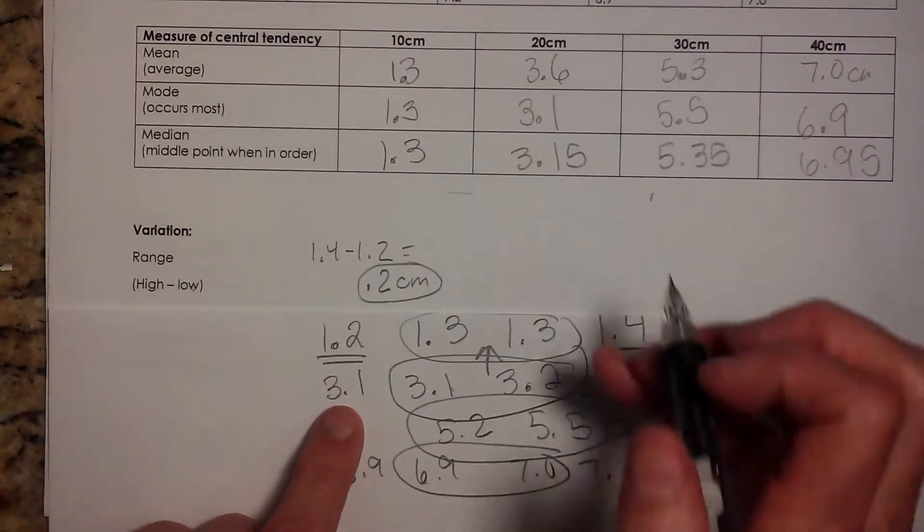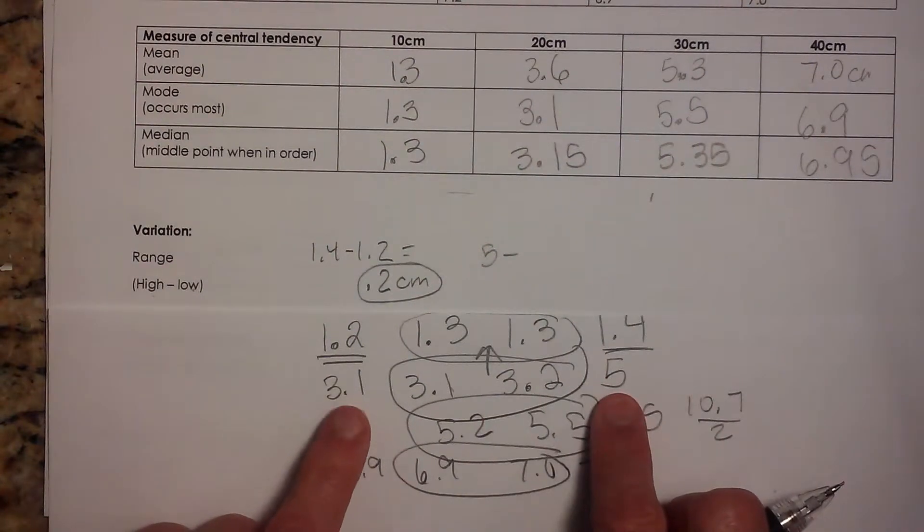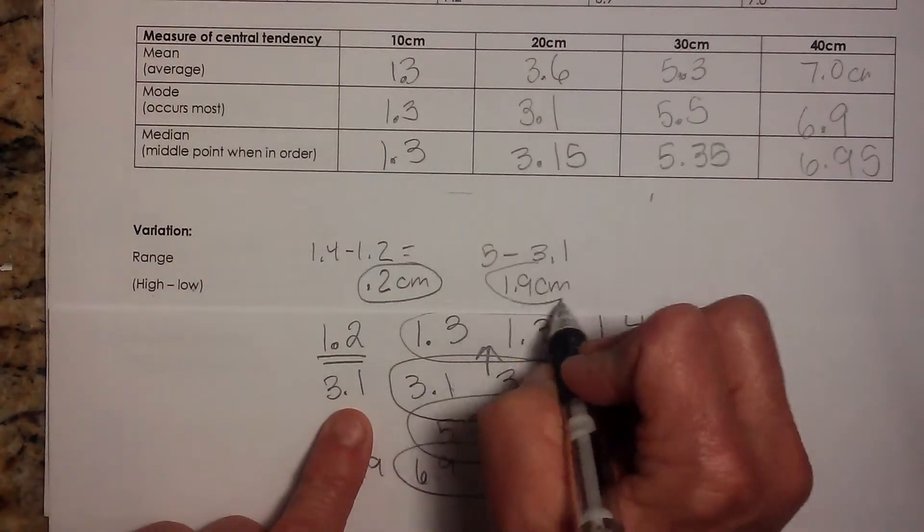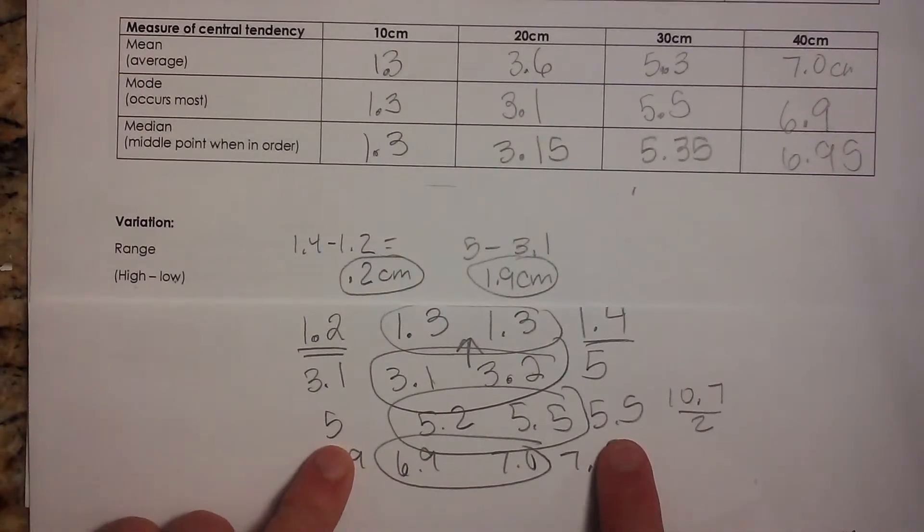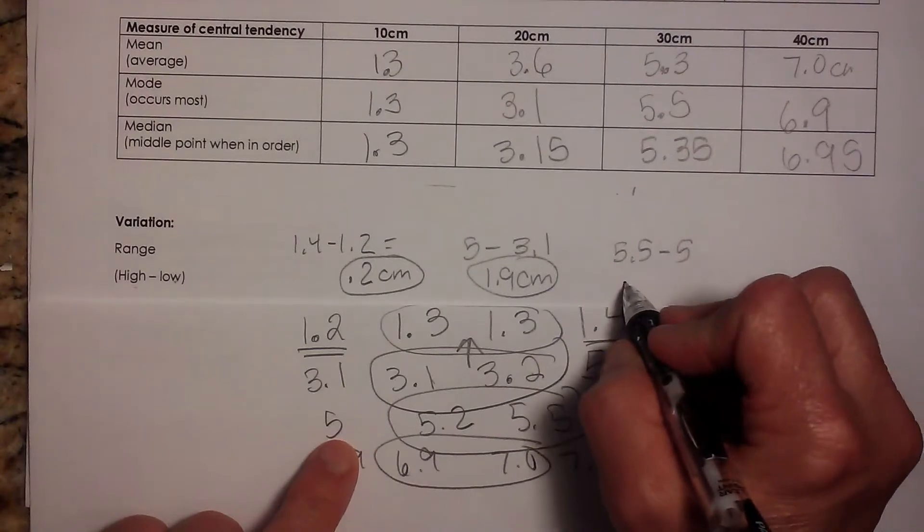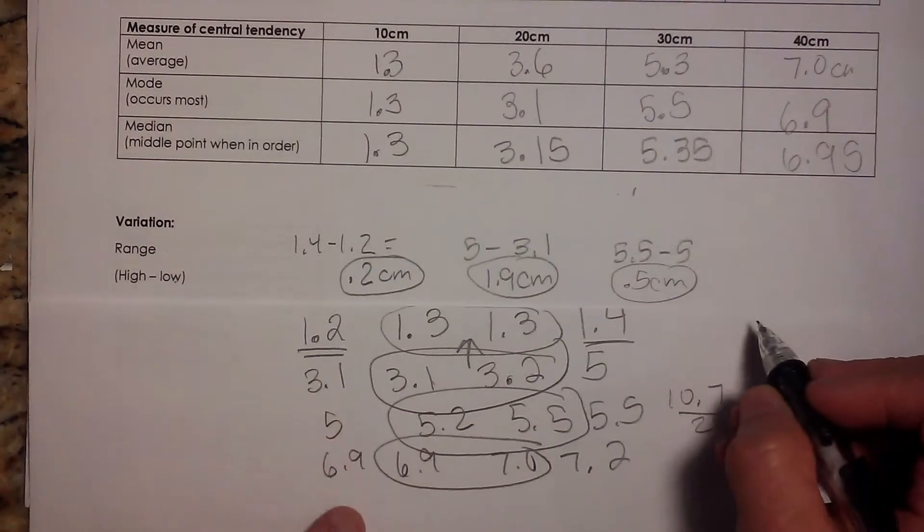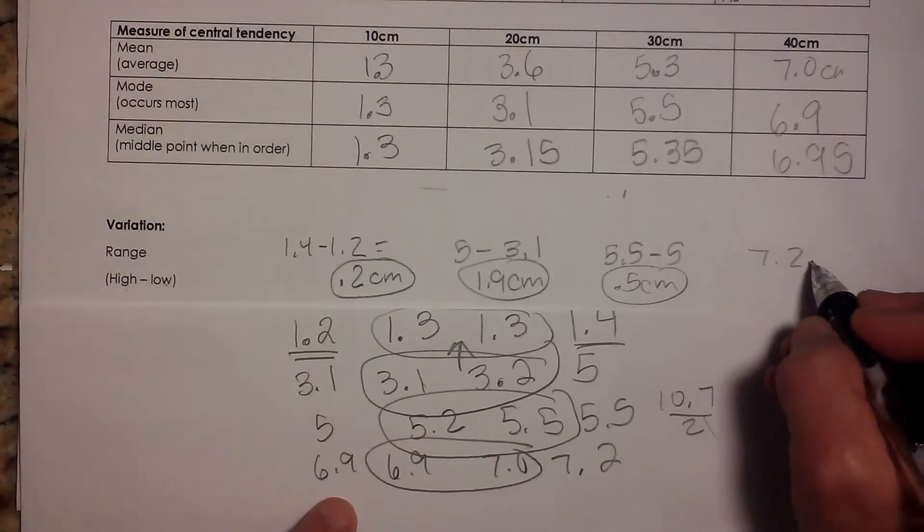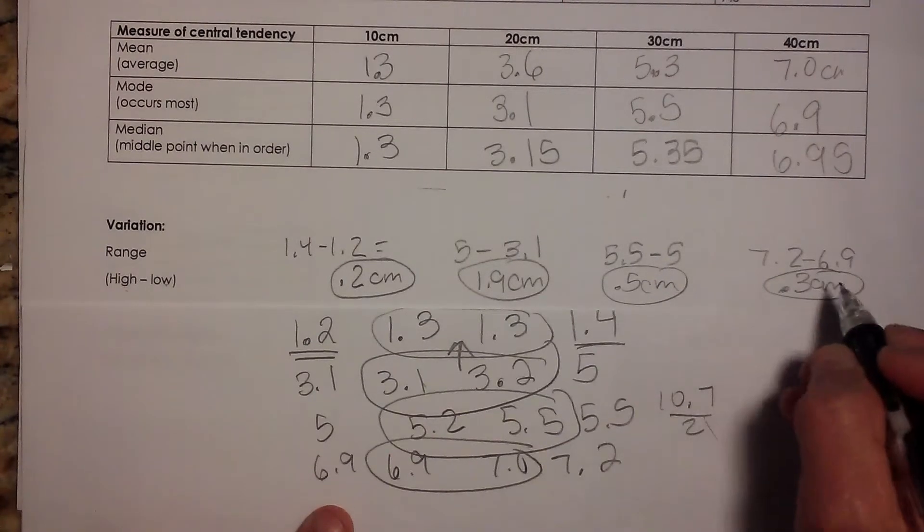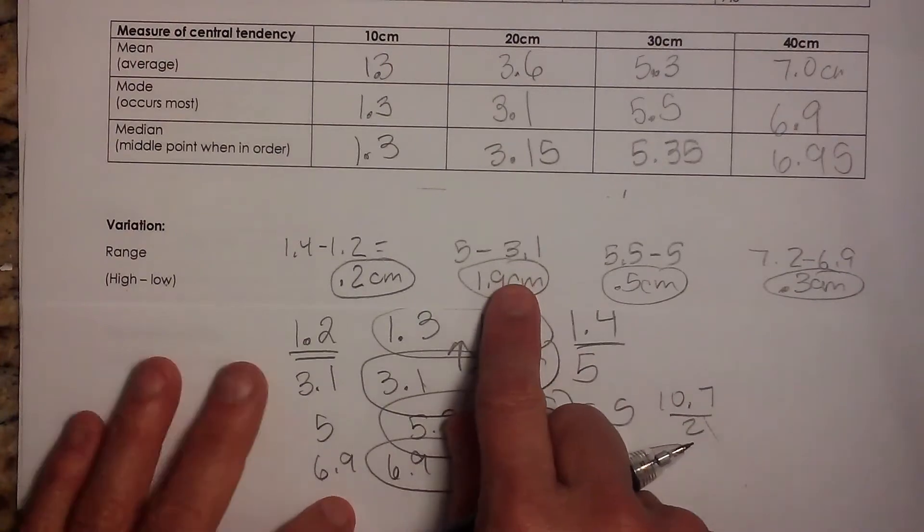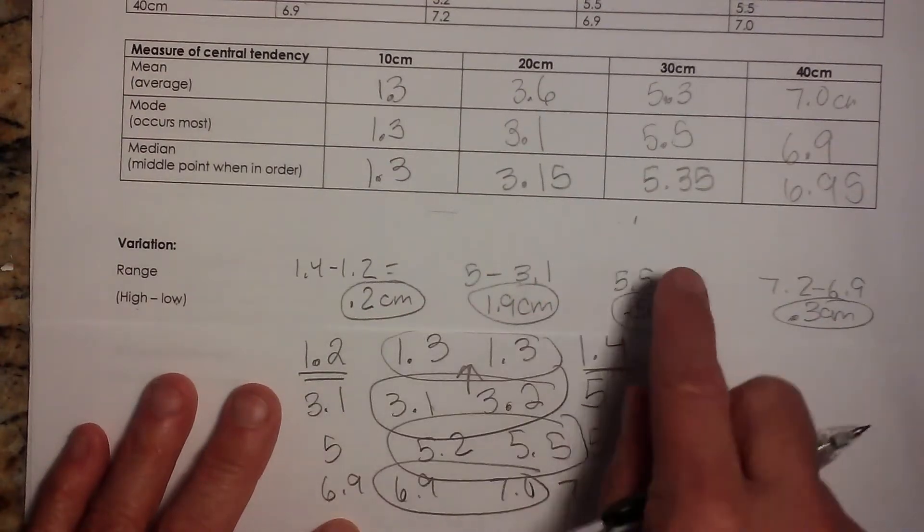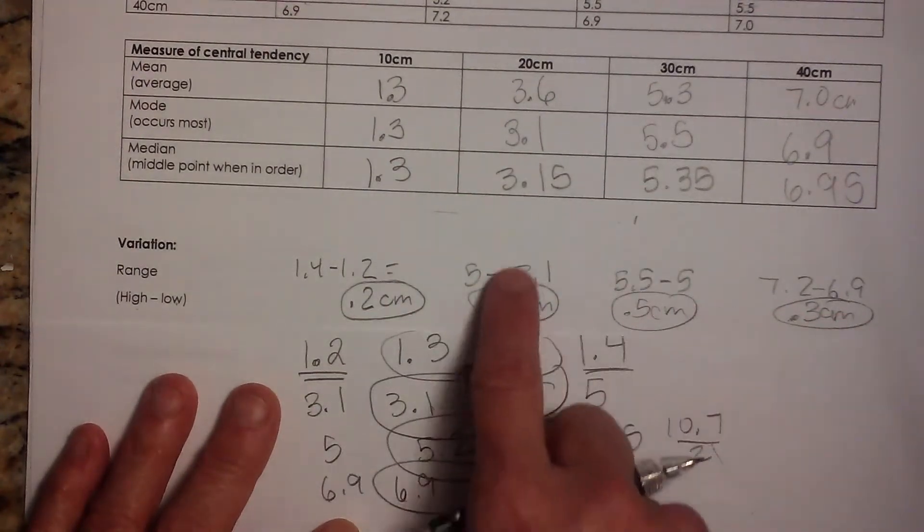Okay, then the next one is 5.5 minus the low is 5. So when I subtract that, I get 0.5 centimeters. And the last one, I have 7.2 was my largest and 6.9 was my smallest. So that one ends up being 0.3 centimeters. So as you can see, that value that was a little skewed is really throwing off my range also. The other trials are pretty close together except for this one.